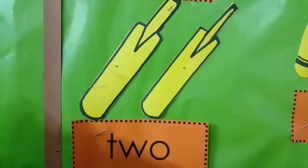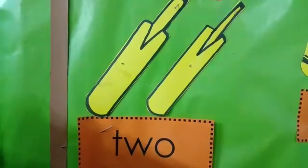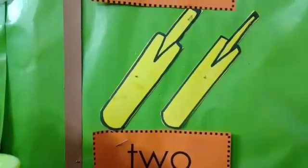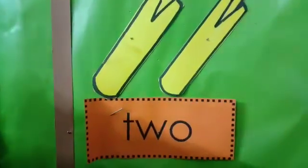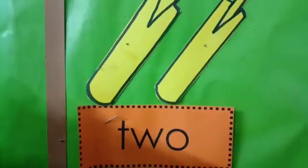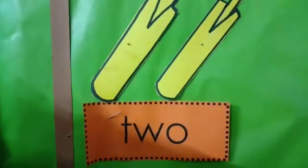How many bats are there? Two. Yes, two. Now, learn the spelling. T-W-O-2. Repeat with me. T-W-O-2.